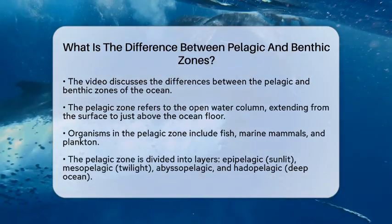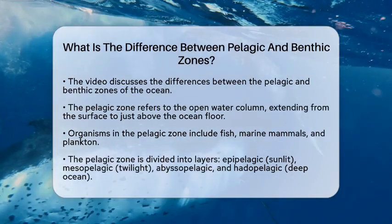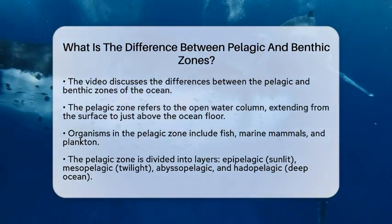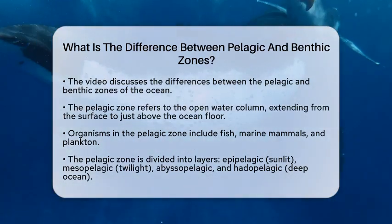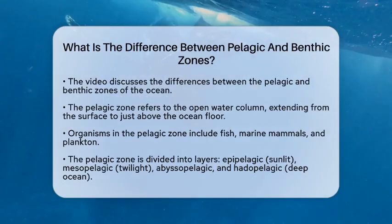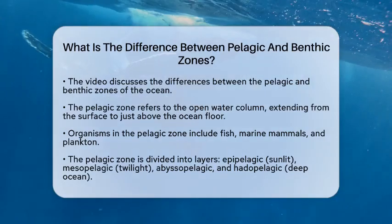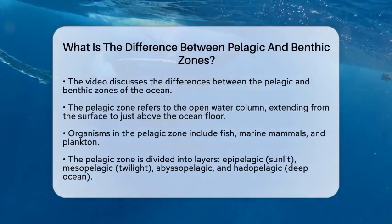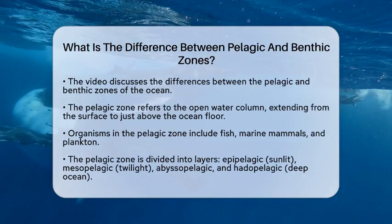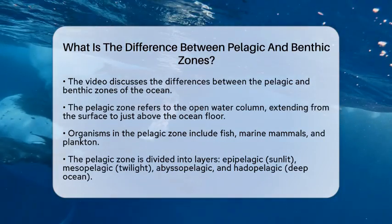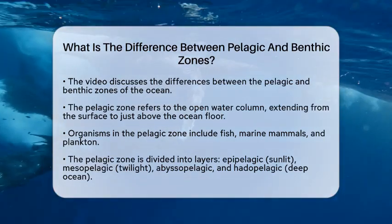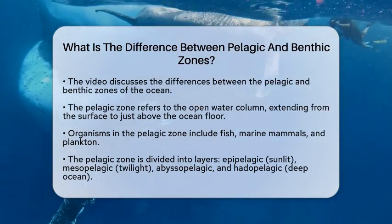The pelagic zone is the open water column of the ocean. It stretches from the surface down to just above the ocean floor, but it does not include the bottom itself. This zone is home to a variety of organisms that swim, float, or drift in the water. You might find fish, marine mammals, and even tiny plankton here.